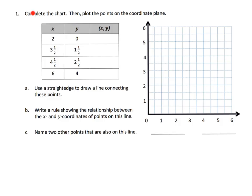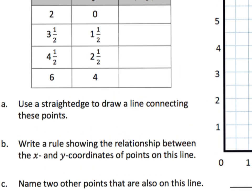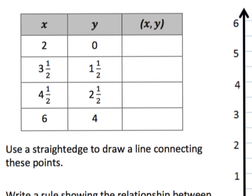We begin by completing the chart and then plotting the points on the coordinate plane. Completing the chart means taking your x value and your y value — your x coordinate and your y coordinate — and making that the ordered pair. So this becomes (2, 0) and this becomes (3.5, 1.5).